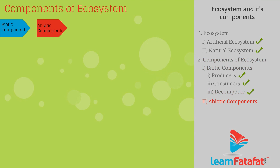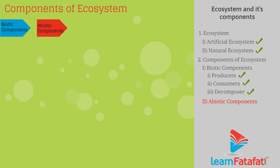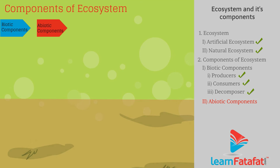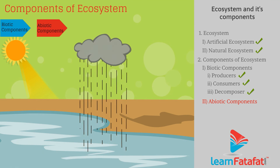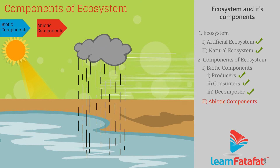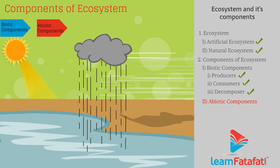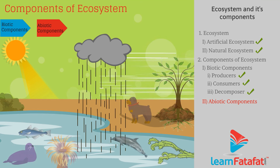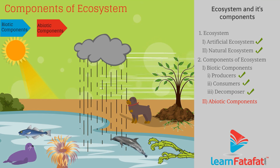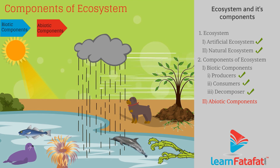Abiotic components. These are the physical factors such as soil, water, sunlight, rainfall, and wind, which affect the activities in an ecosystem.